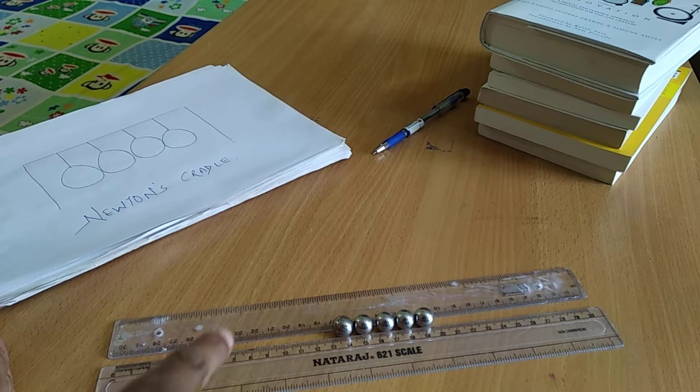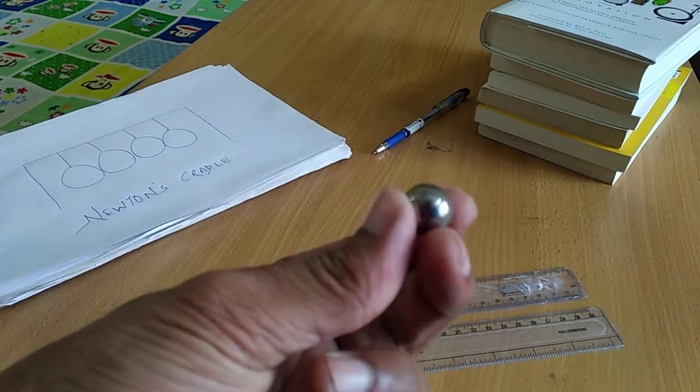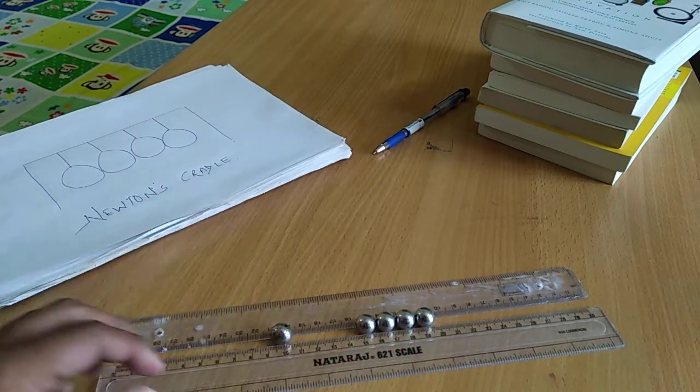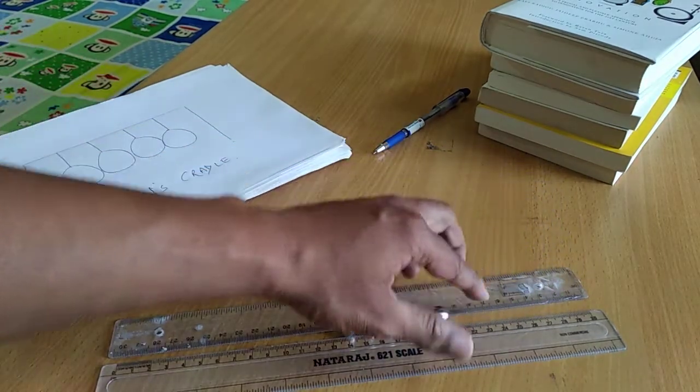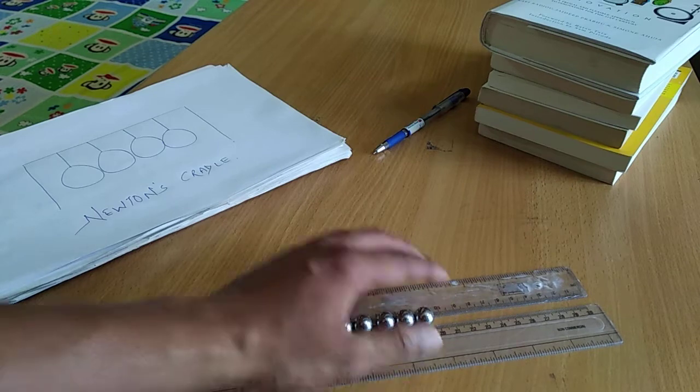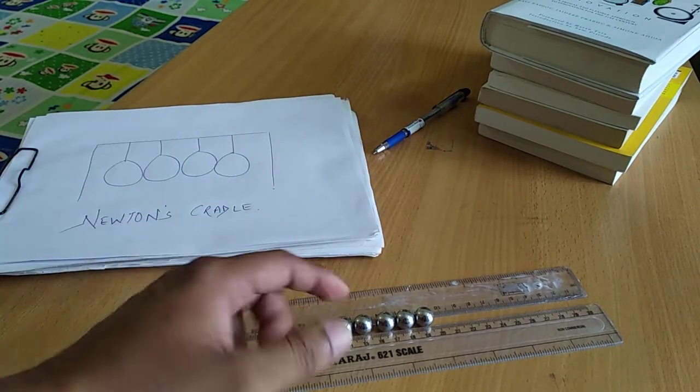I have two scales 30 centimeters long and I have ball bearings. These are simple ball bearings you can purchase from anywhere. When you put it here and release it, you can see that only one goes from the other side. The same happens in the famous model of Newton's Cradle and the same is happening here also.